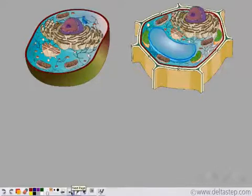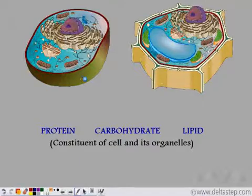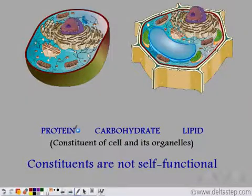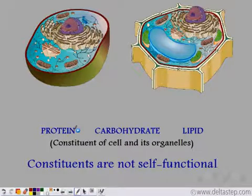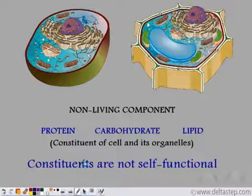What are these cellular organelles made of? They are made up of molecules like proteins, carbohydrates, and lipids — these three molecules make up the cellular organelles. Individually, these molecules are not self-functional, but when all three molecules come together, they form the functional cellular organelles. So these constituents that make up the cell organelles are the non-living component of the cell.